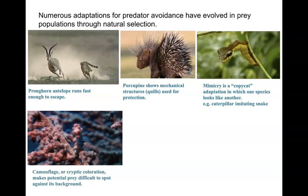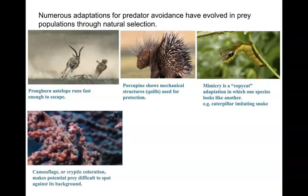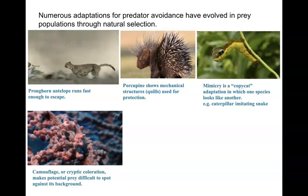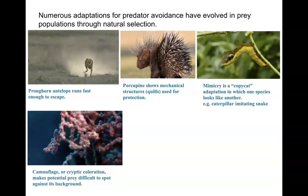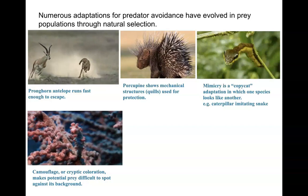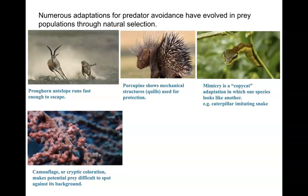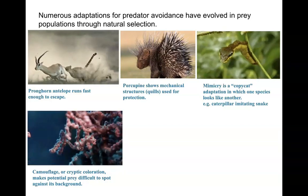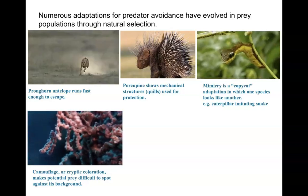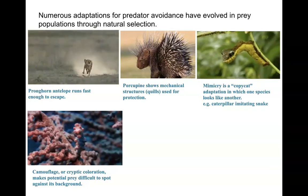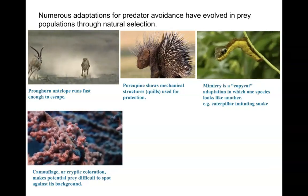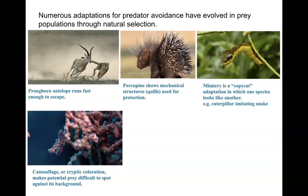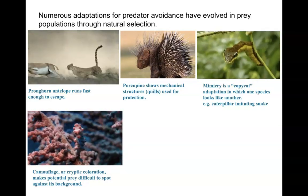Pygmy seahorses have a really neat adaptation called camouflage, also known as cryptic coloration. The pygmy seahorse is able to blend into its environment quite beautifully. If a predator can't see you, it can't find you — so that predator will have a much more difficult time preying upon that organism.